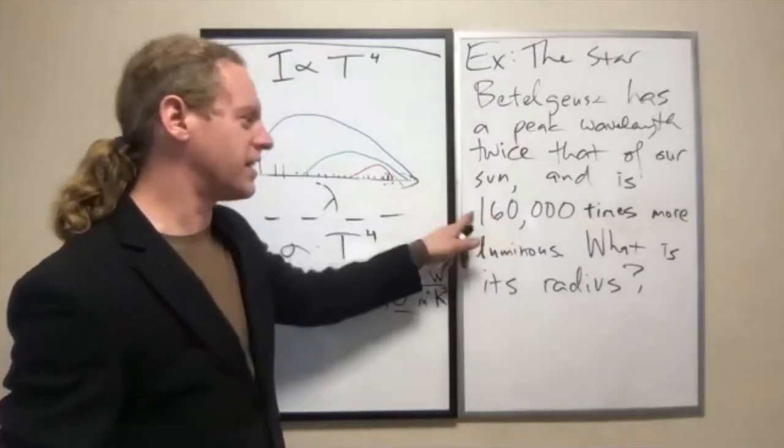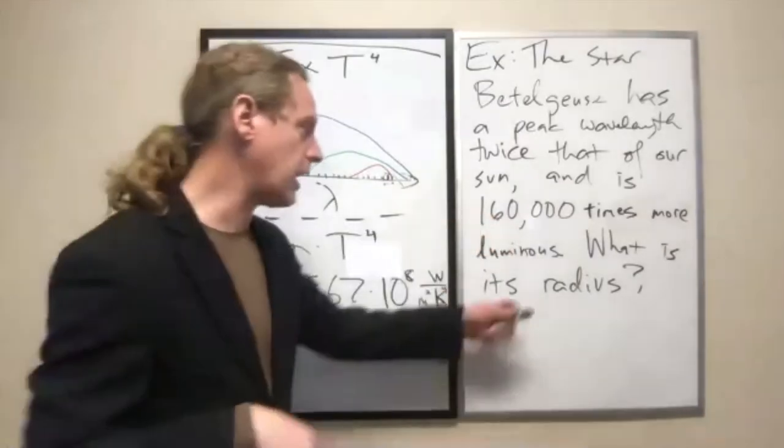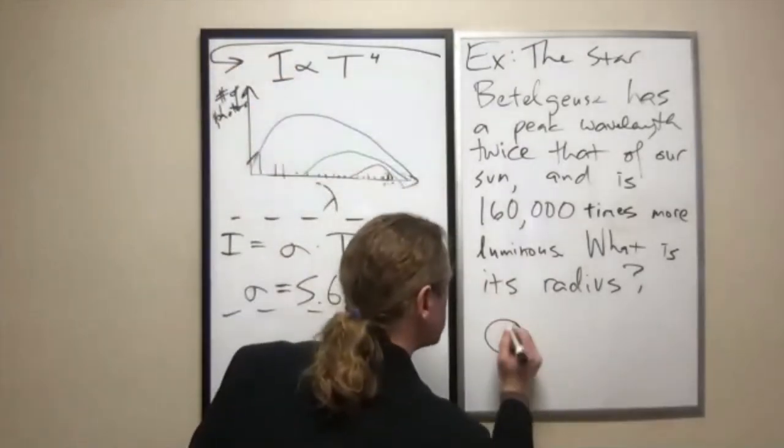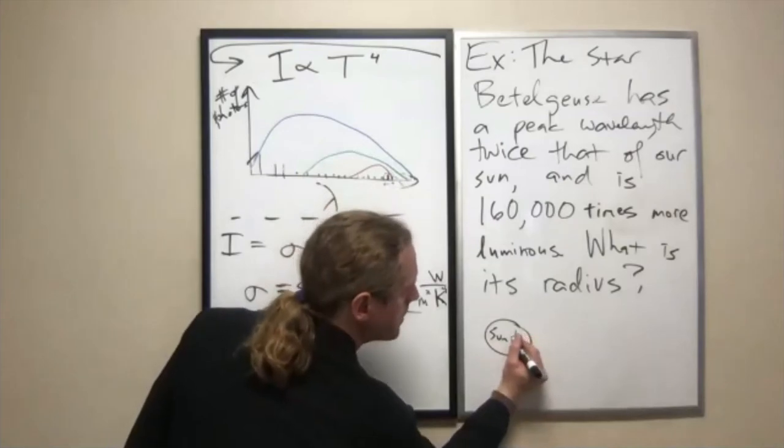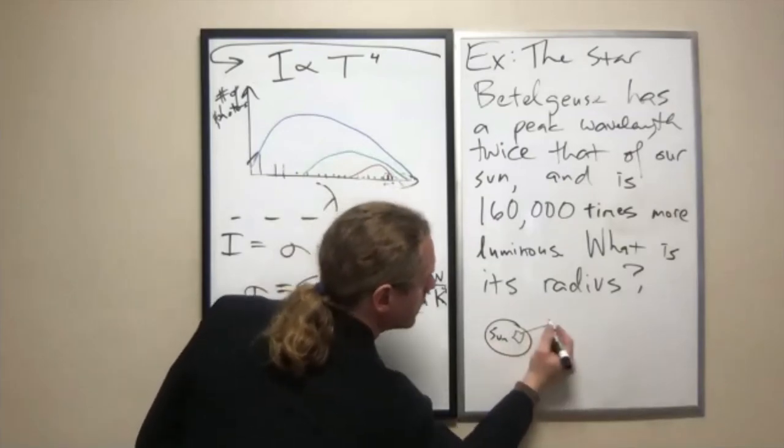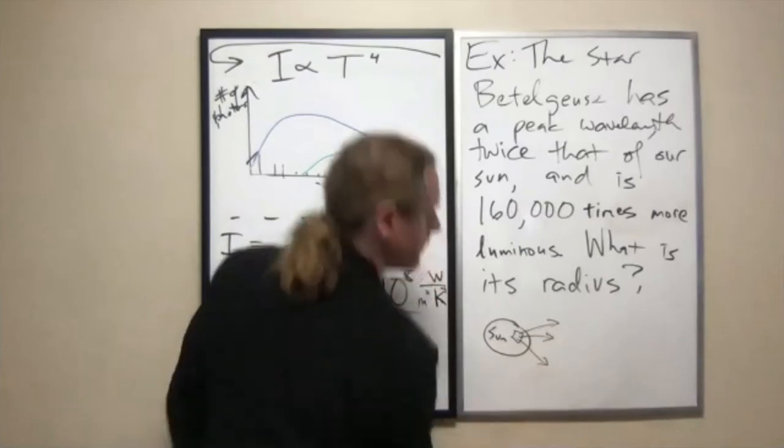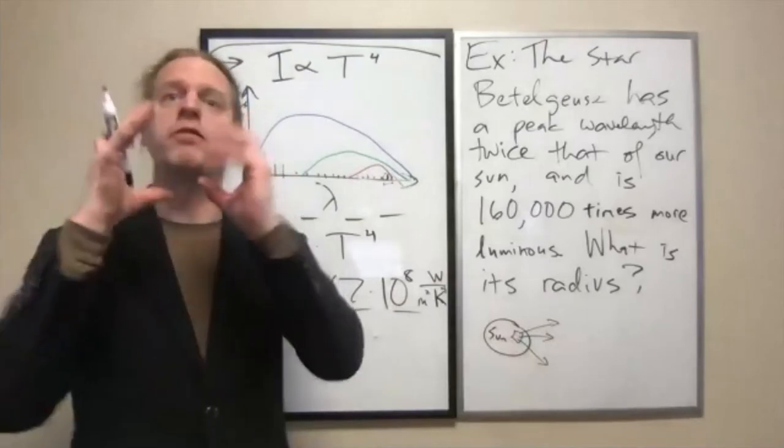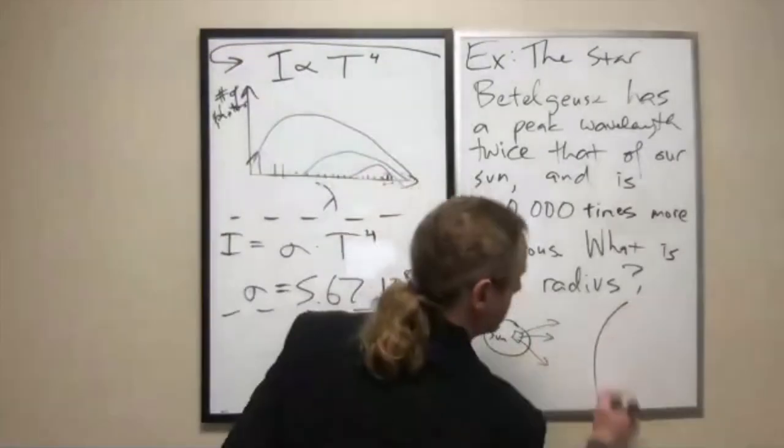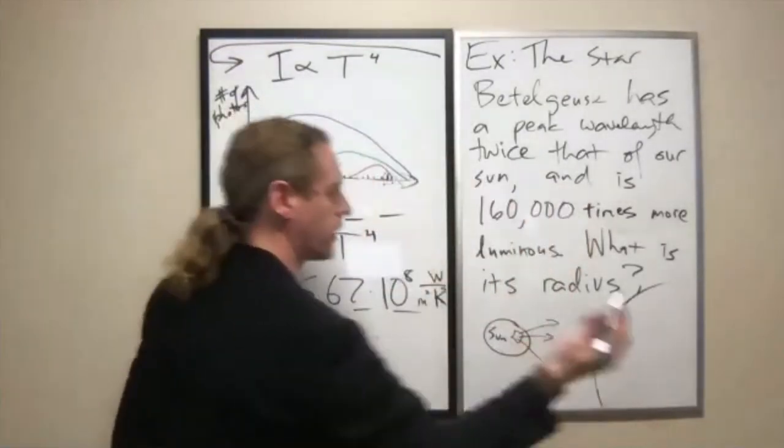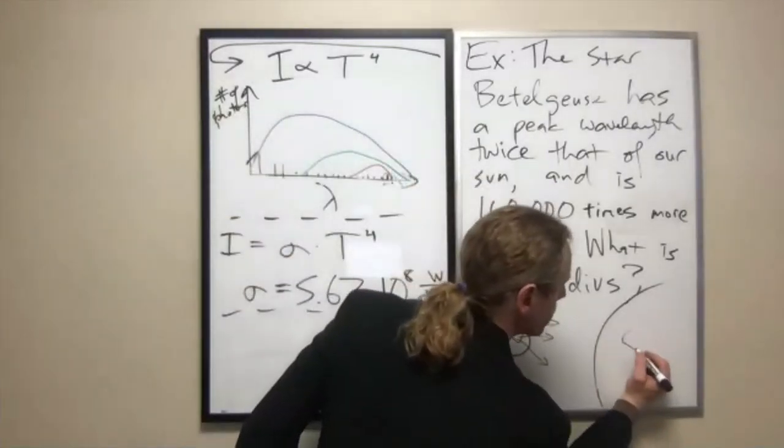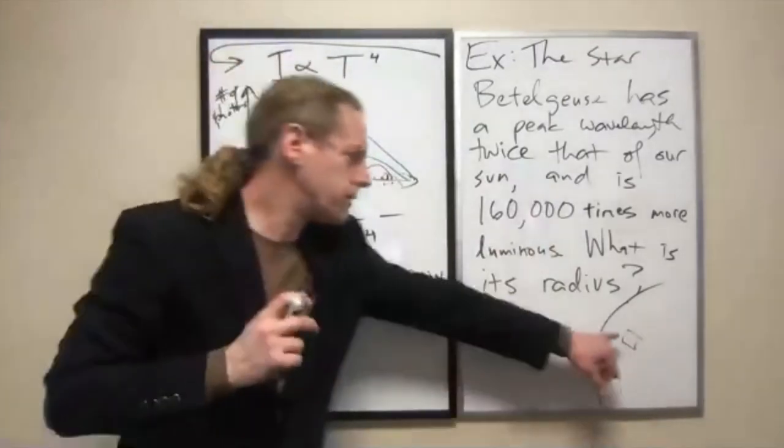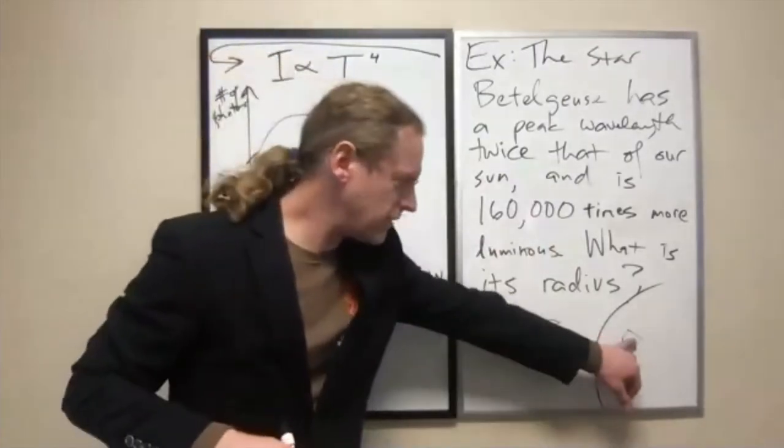Anyway, there are other calculations that went into this that I'm not going to get into. But we can answer directly what its radius is. I'm going to draw our sun here, and let's say we happen to measure how much light is coming out of one square meter for our sun. There's a given amount of light per square meter of our sun, and we know how much overall light our sun is emitting. And then there's a much bigger star over here, which we can already predict.